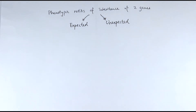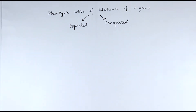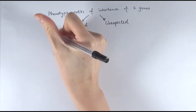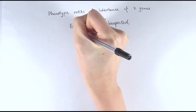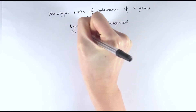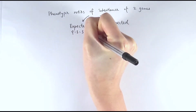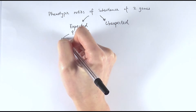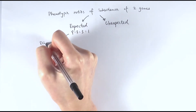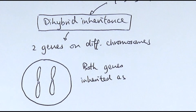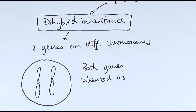First, we'll look at the expected ratio. Because here we'll talk about the inheritance of two genes, we'll be looking at dihybrid inheritance. The expected ratio for a dihybrid inheritance would be 9 to 3 to 3 to 1. I have made another video going into this in a lot more detail using the pea example by Mendel.